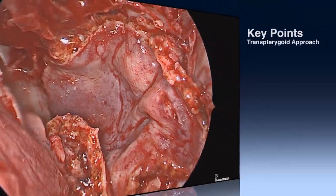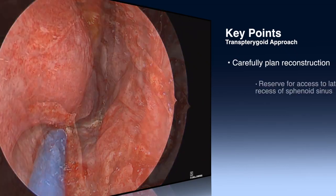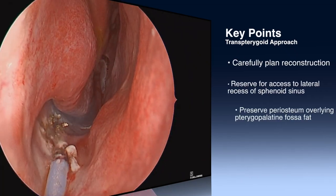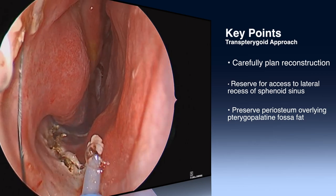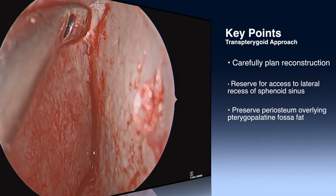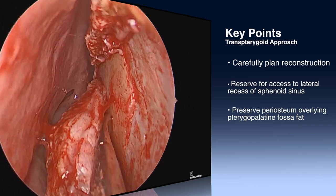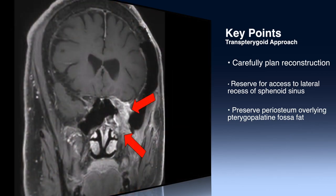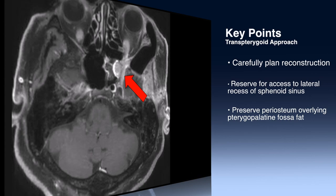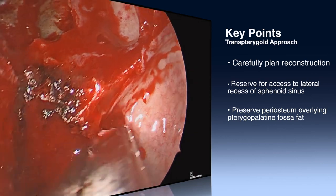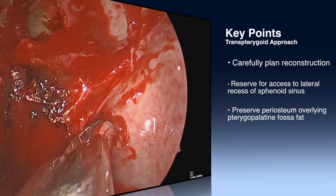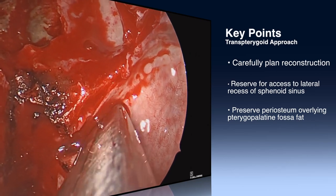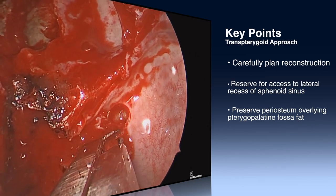The key points of a transteregoid approach are the following. You should always consider your reconstructive options ahead of time, because you will typically burn the ipsilateral sphenopalatine artery during your transteregoid approach. This approach is typically reserved for accessing the lateral recess of the sphenoid sinus, and thus a careful examination of preoperative imaging is very important. As you access the pterygopalatine fossa, it is ideal to leave the periosteal layer intact such that the fat does not spill out and interfere with your field.